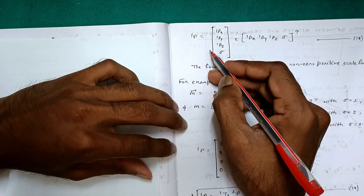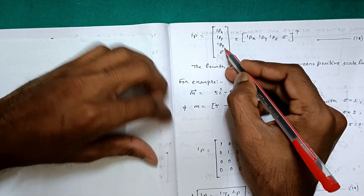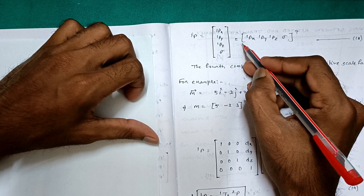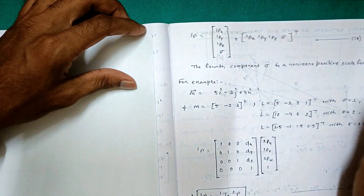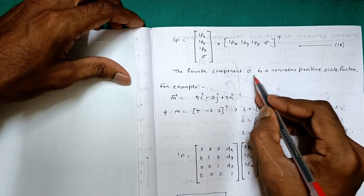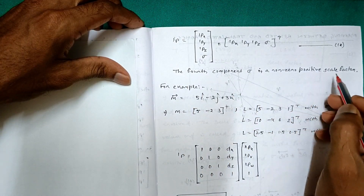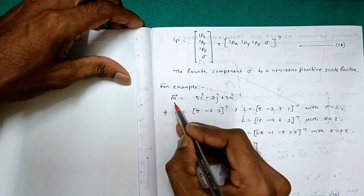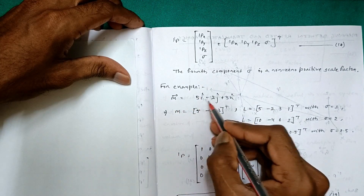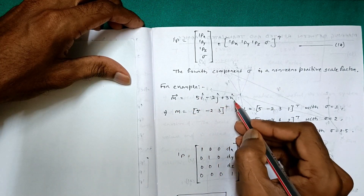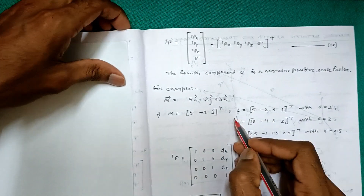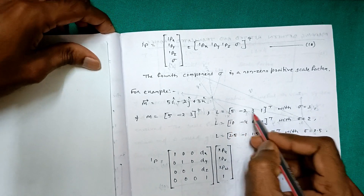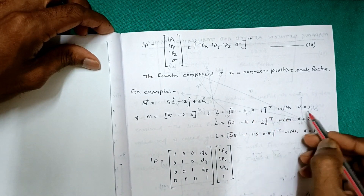Now, the vector 1p is written as [1px, 1py, 1pz, sigma] transpose. The fourth component sigma is a non-zero positive scale factor. For example, a vector m = 5i − 2j + 3k can be written as m = [5, −2, 3] transpose, or equivalently as [5, −2, 3, 1] transpose with sigma equal to 1.